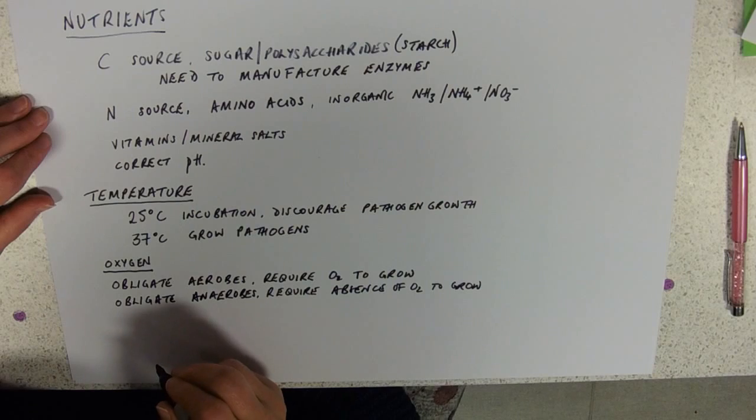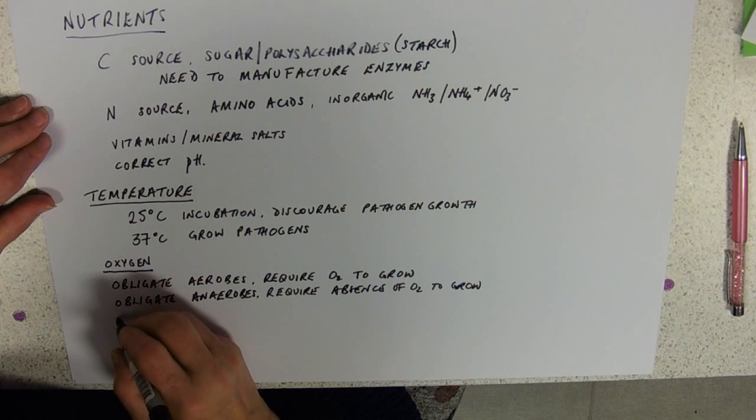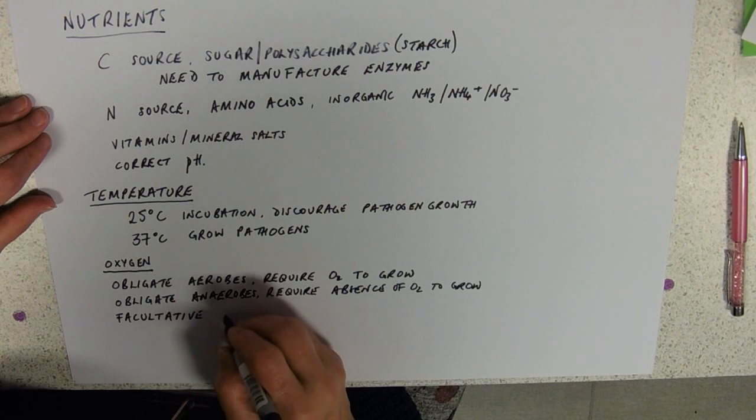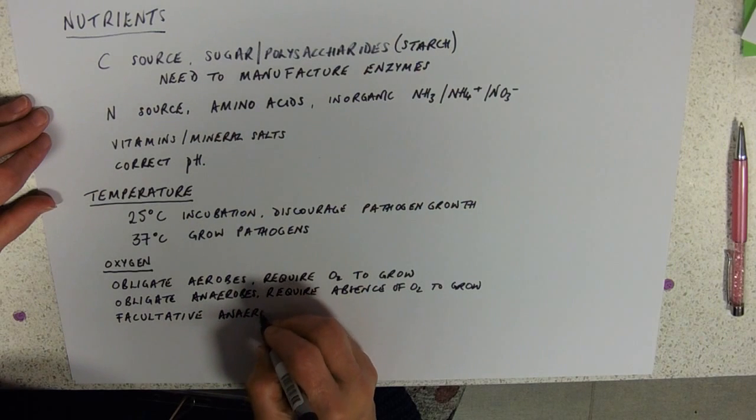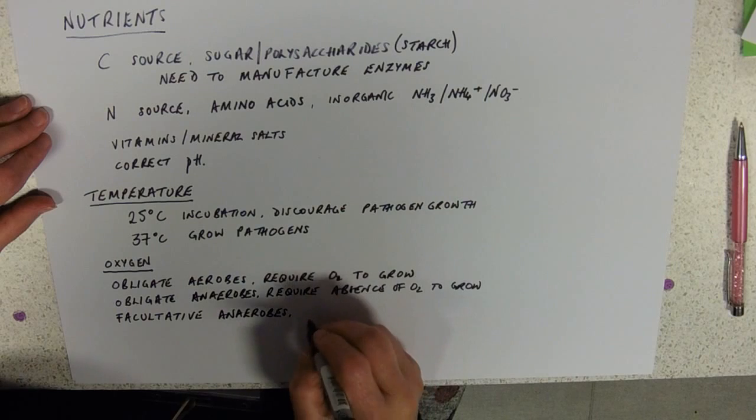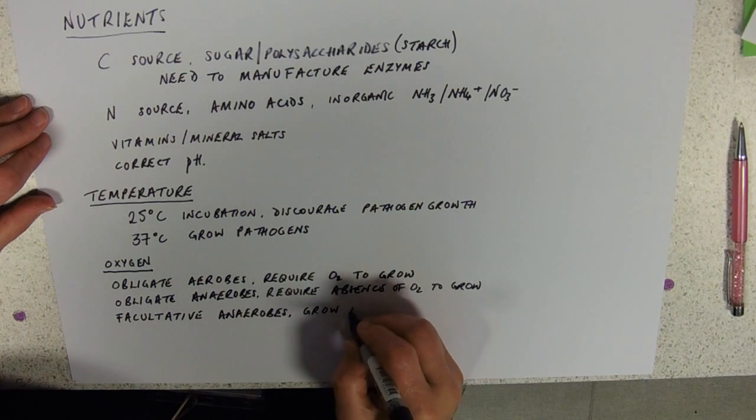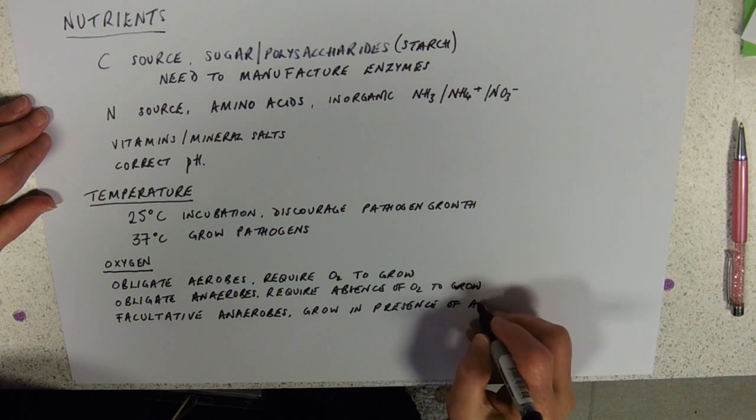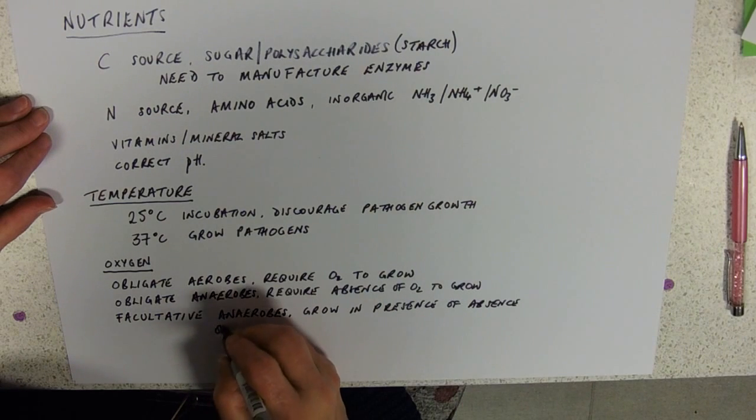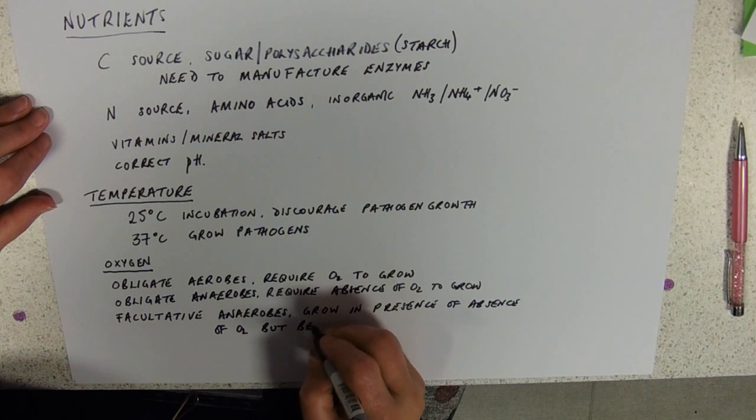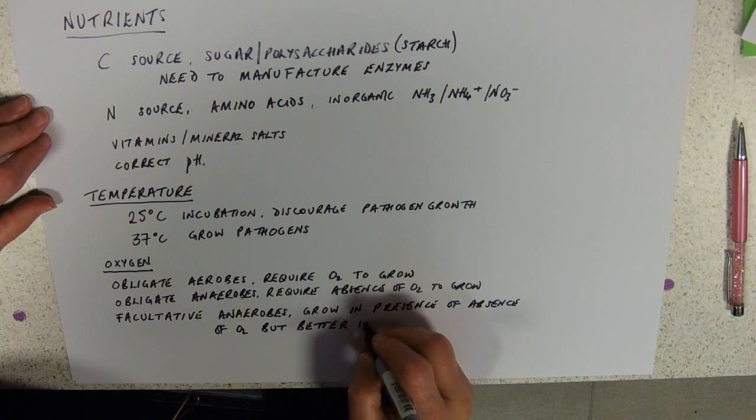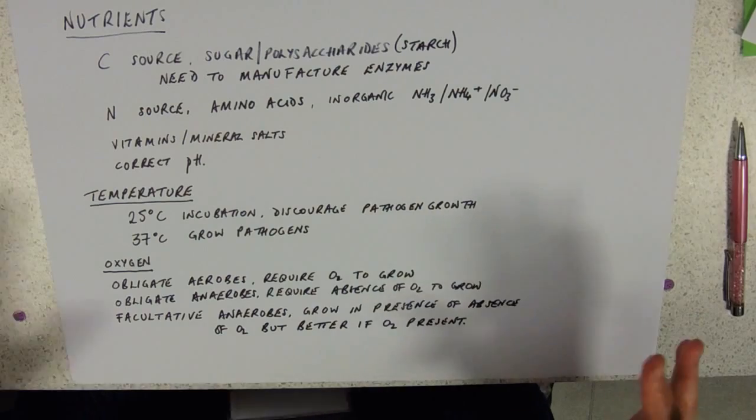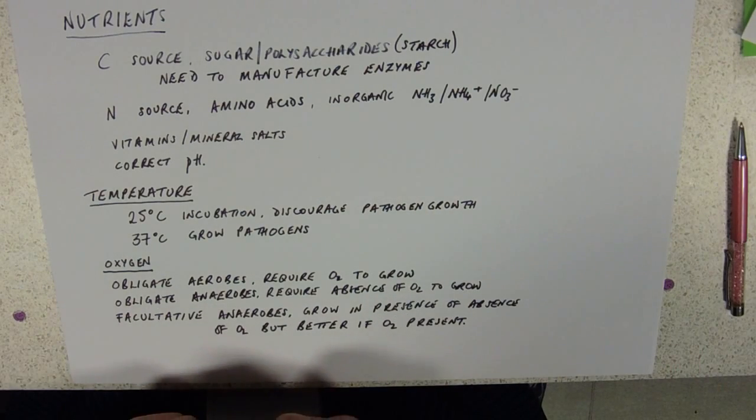The opposite of that, the obligate anaerobes. And these require the absence of oxygen. So if oxygen is present, they just don't like it, they won't grow in it. And lastly but not least, we've got the lovely facultative, great word. And these are, we call them facultative anaerobes and you really mustn't get confused about that. Now these grow in the presence or absence, but better if oxygen is present.